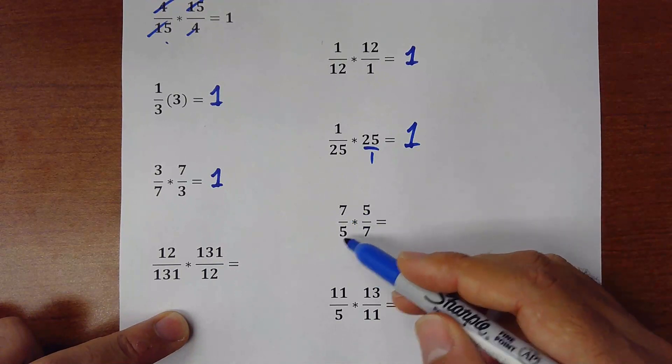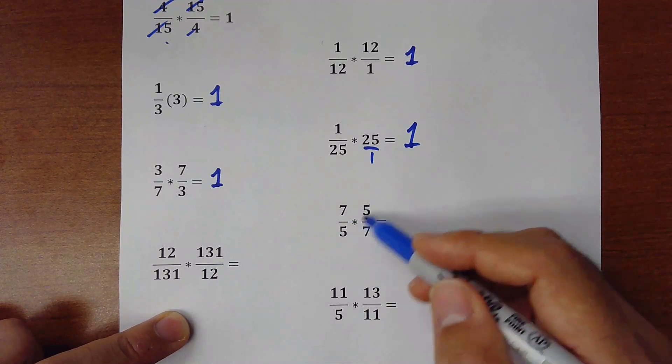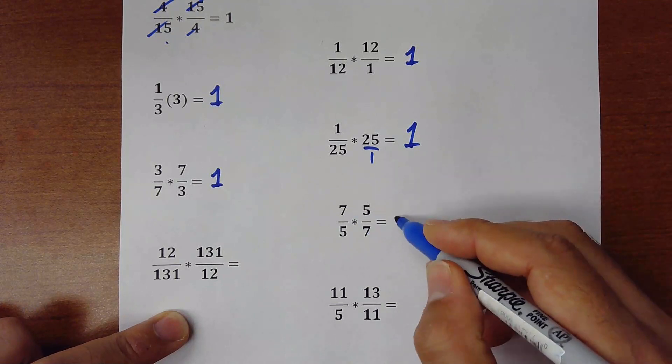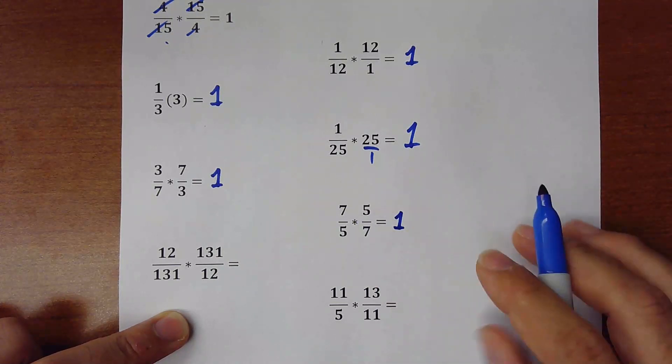Let's check this. 7 over 5 times 5 over 7. The same. We simplify. And it's a flip. So it's basically 1. You don't need to do calculations when you're doing this.